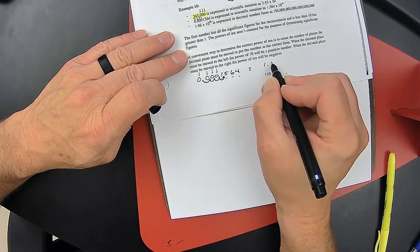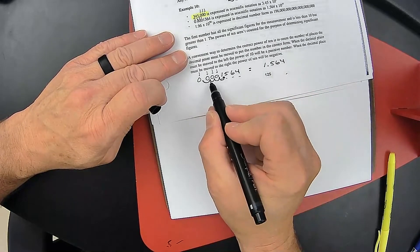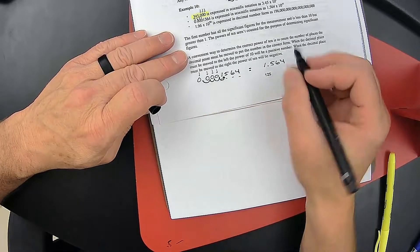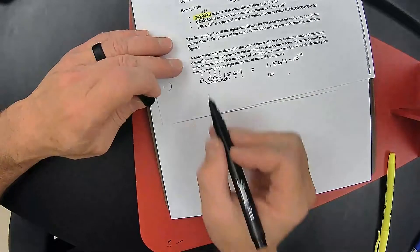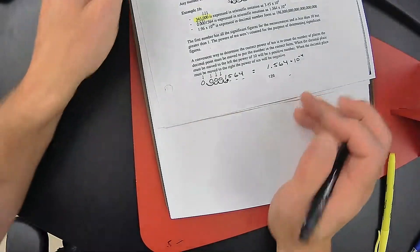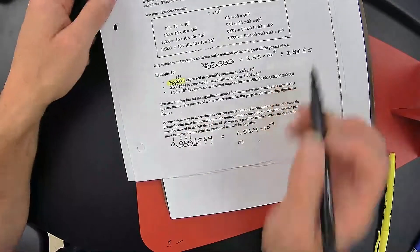So this becomes 1.564 and I moved it one, two, three, four places times 10 to the negative fourth. When I'm moving the decimal to the right, it becomes negative. In my first example, I was moving it to the left and it's positive.